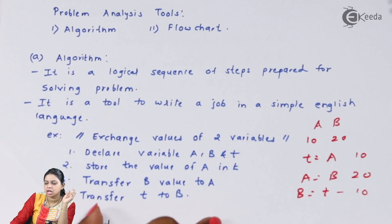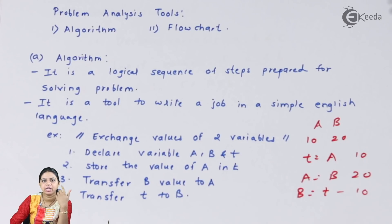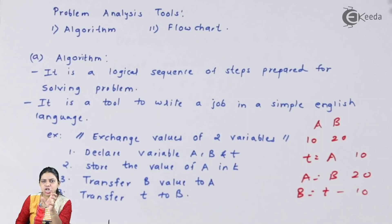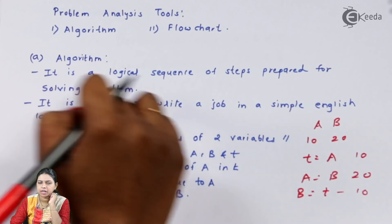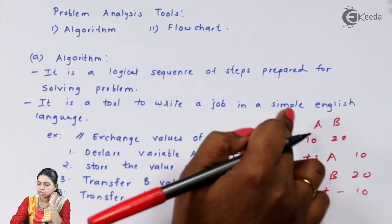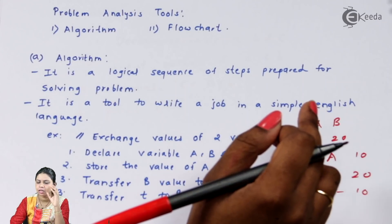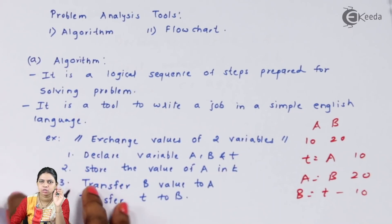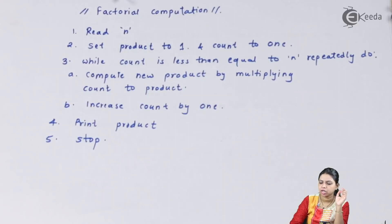This is how I write an algorithm. Whatever steps I will be doing while writing a program, those steps you write in simple English language, and then it is called an algorithm. It is a logical sequence of steps prepared for solving a program, and it is a tool to write a job in simple English language.